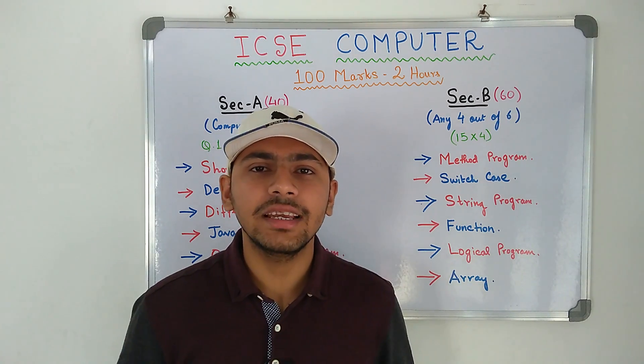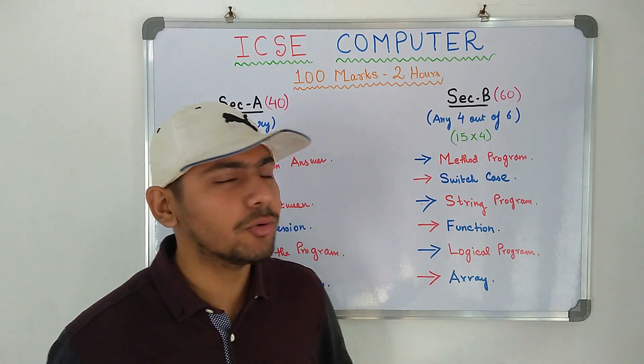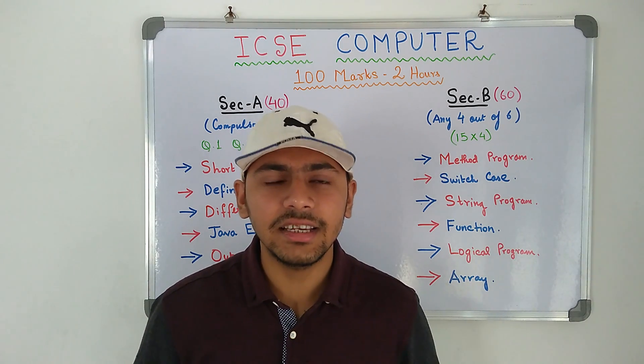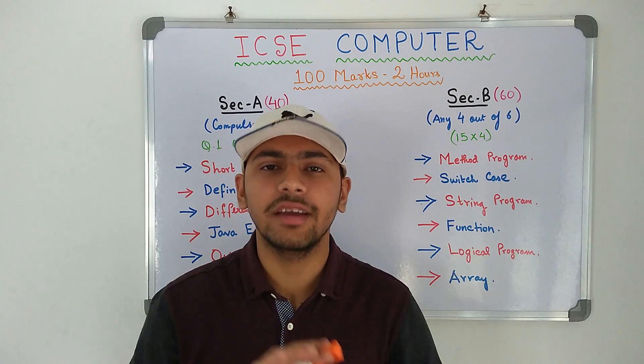If you do all this, you can easily score 15 in every program that you attempt. Computer applications paper is relatively very easy and you can score 100 out of 100 very easily over here.